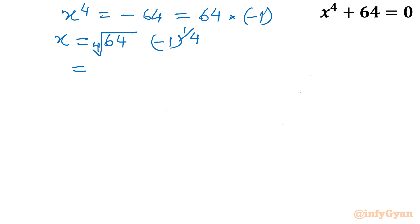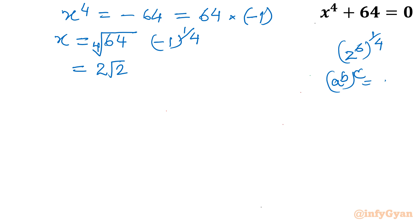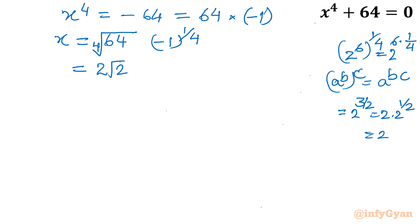Now let's simplify the 64 part: 64 is 2 to the power 6, and raising it to the power 1/4, we multiply exponents: 6 times 1/4 gives 3/2. So that is 2 raised to the power 3/2, which we can write as 2 times 2 to the power 1/2, which is 2-root-2. The modulus is done; now for the argument part.